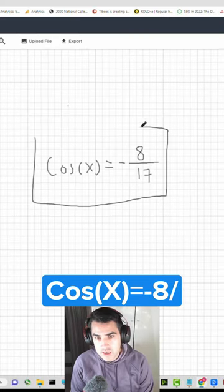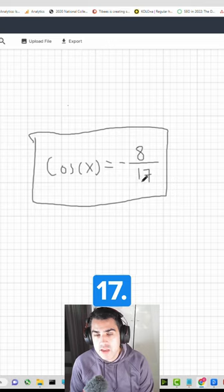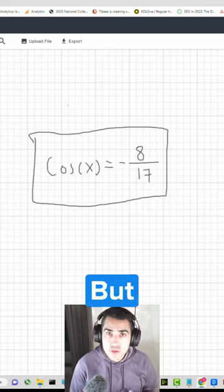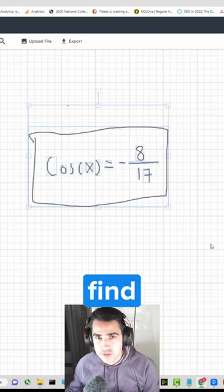Now the answer is cos x equals minus 8 over 17. But do you know why? Watch this video and you'll find out.